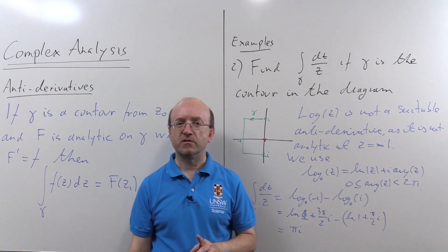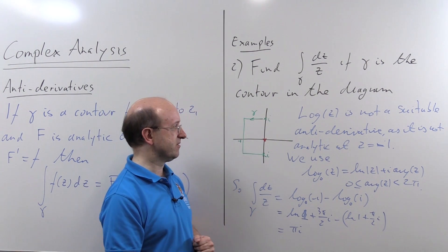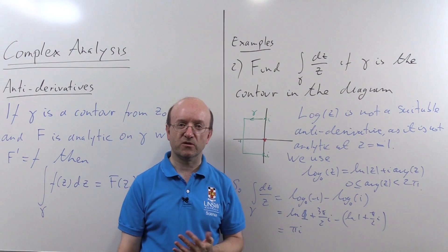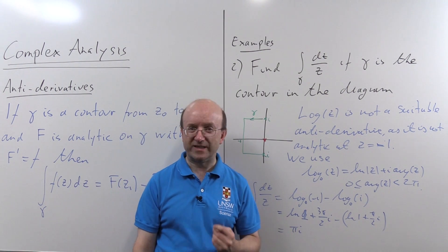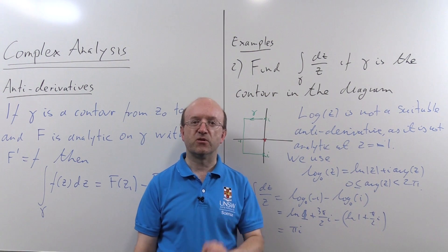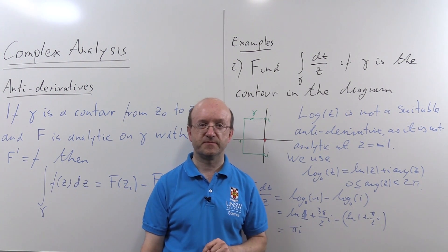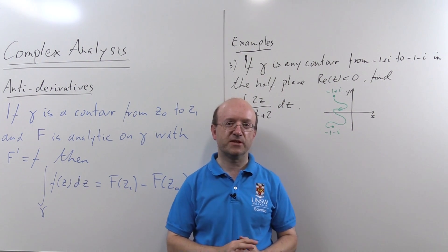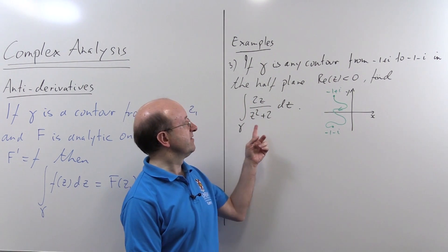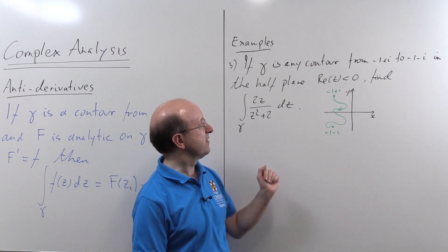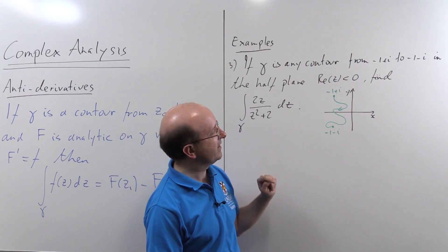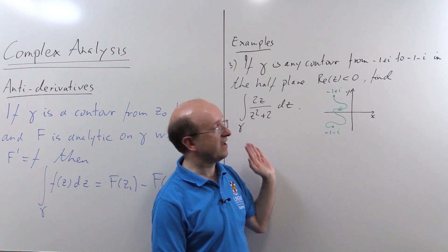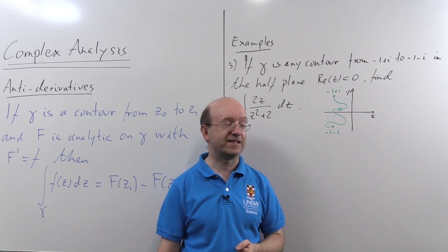This is a pretty typical use of the antiderivative theorem to calculate an integral, in particular when we're integrating 1/z and trying to use log. We've got to be careful about exactly which version of log we use — we must have a version of log that is analytic along the contour. In this third example, which is rather more complicated, I'm going to look at the integral of 2z/(z²+2) for an arbitrary contour from minus 1+i to minus 1−i that stays in the left half plane — that is, where the real part of z is less than 0.